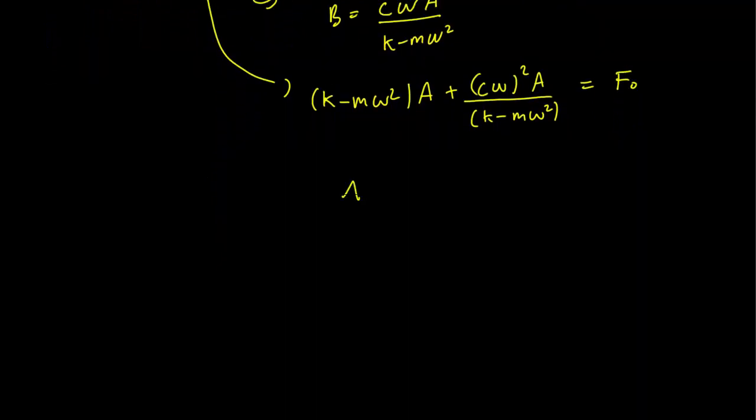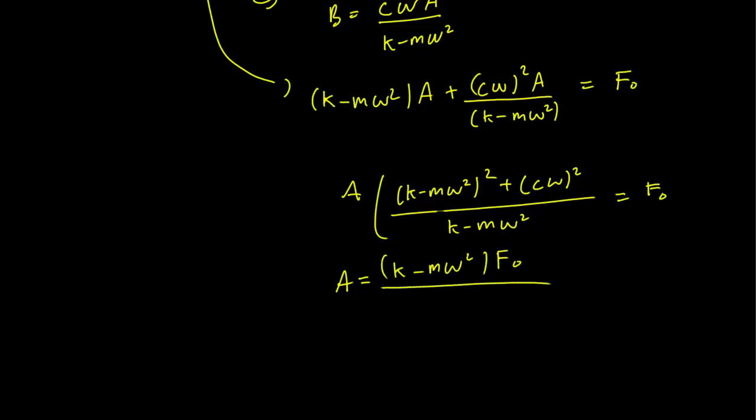This is equivalent to factoring a out. K minus m omega squared squared plus c omega squared over k minus m omega squared equals f naught. And so a is just going to be equal to k minus m omega squared f naught over k minus m omega squared squared plus c omega squared.